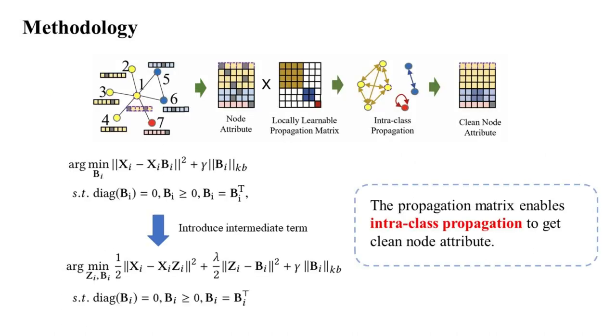Then we introduce intermediate term, and the formulation is iteratively optimized by the algorithm we have given to solve for our desired propagation matrix. The propagation matrix enables intraclass propagation to get clean node attribute.